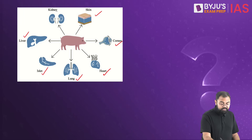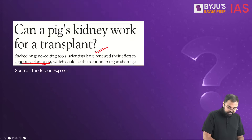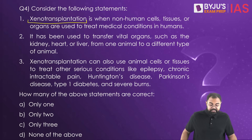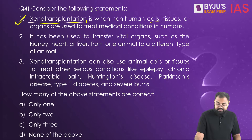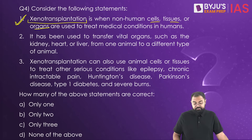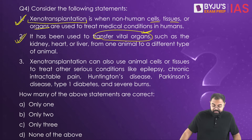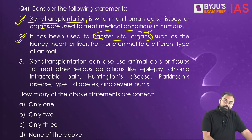Many experiments and studies have been conducted specifically on pigs to determine whether organs from pigs can work on humans. Looking at the statements: first, xenotransplantation uses non-human cells, tissues, or organs to treat medical conditions in humans — correct. Second, it has been used to transfer vital organs such as kidney, heart, or liver from one animal to a different type of animal — correct. Third, xenotransplantation can also use animal cells or tissues to treat conditions like epilepsy, chronic intractable pain, Huntington's disease, Parkinson's disease, Type 1 diabetes, and severe burns.